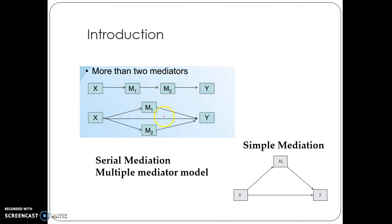This model is representing the multiple mediation model. Here our goal is we have mediators called M1 and M2 between X and Y. Our goal is finding the strength of the relationship between X and Y through M1 and M2 in parallel — whether M1 is strongly mediating the relationship between X and Y, or M2 is strongly mediating it.